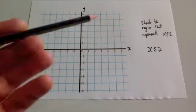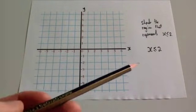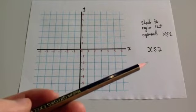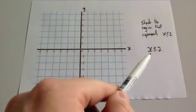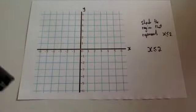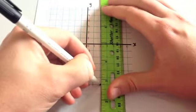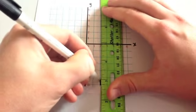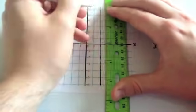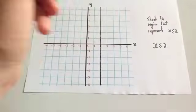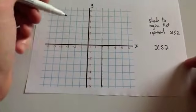This question asks us to shade the region that represents x is less than or equal to 2. First, let's draw the graph x equals 2. Because it's a less-than-or-equal-to sign — it has the equal part — it's going to be a solid line. The line x equals 2 is a vertical line, because x is the horizontal position, meaning all horizontal positions are 2.